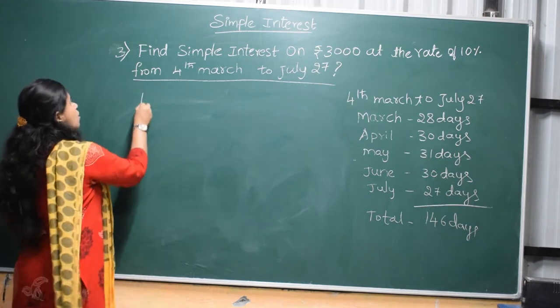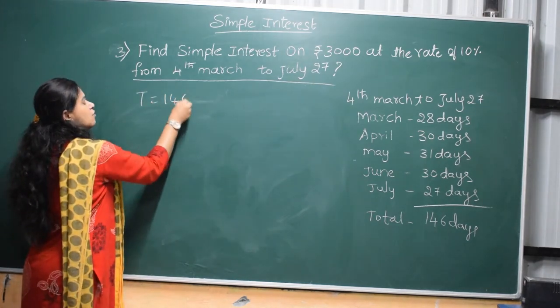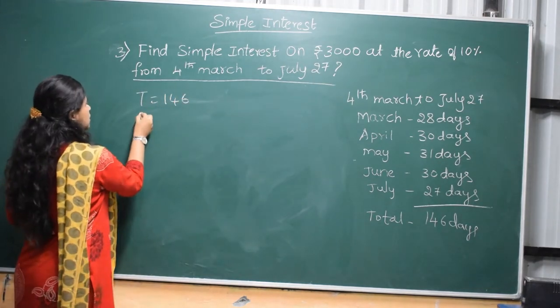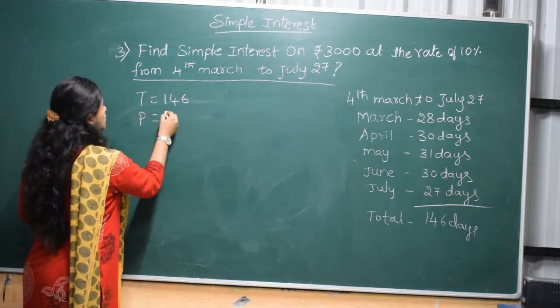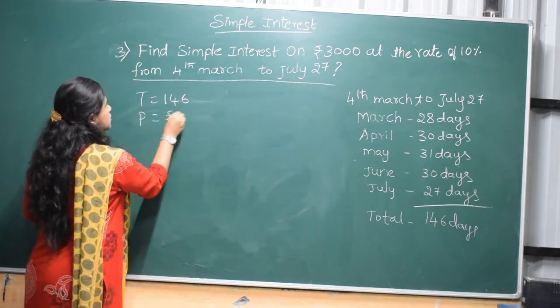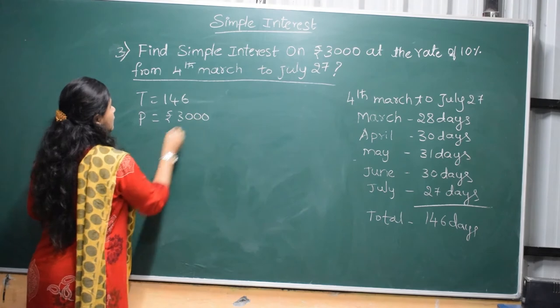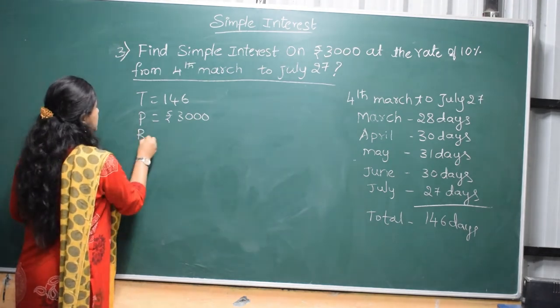So the time is 146 days per year. Next, Principle - they have only given Rs. 3000. And rate is 10%.